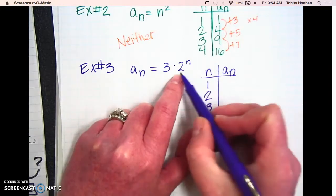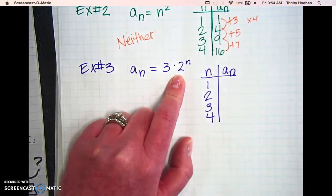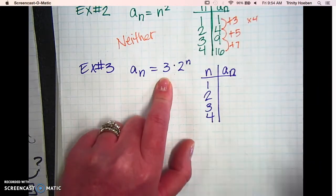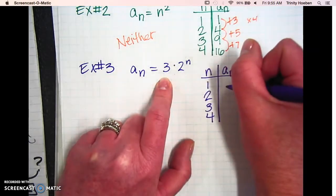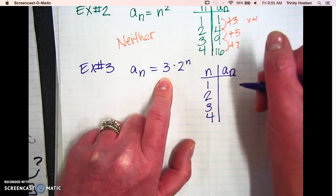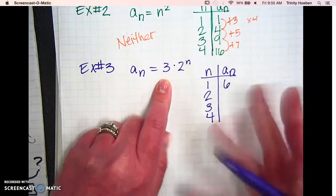Okay. So first power. 2 to the first power is 2. 2 times 3 is 5. Oh, no. 2 times 3 is 2. Last time I checked it was 6.